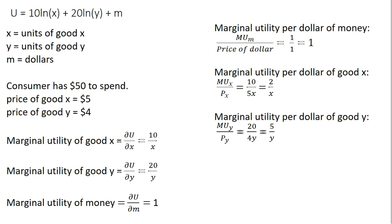Hello. In this video, we're going to put money in the utility function. So we have a consumer's utility function: utility equals 10 times the natural log of x plus 20 times the natural log of y plus m, where m is our special case here of putting money in the utility function.